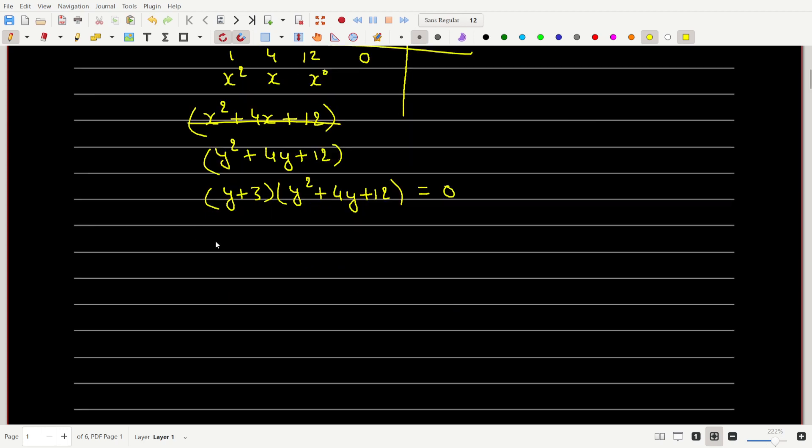The first factor gives me a real root. The second factor, the determinant is 4 square which is 16, minus 4ac which is 12 times 4 is 48. Which means determinant is less than 0, which means this factor has no real roots.